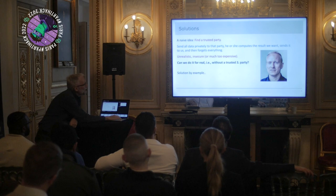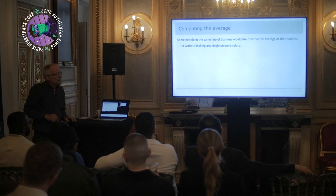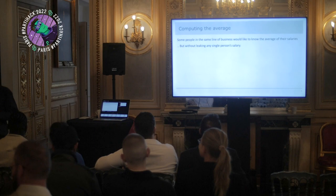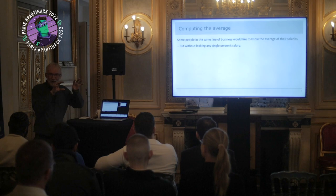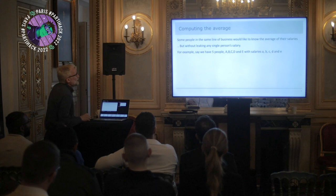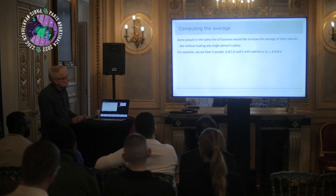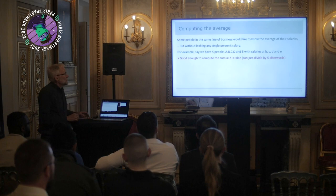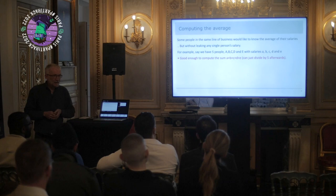Here's a very simple example. Let's say we have some people in the same line of business who would like to know the average of their salaries — to figure out whether they should go to their boss and complain, or maybe keep a low profile because they're making much more than average. But of course, without leaking any single person's salary. Can you do this? You can — it's pretty easy. Let's say we have five people A, B, C, D, and E, with salaries a, b, c, d, and e. It's good enough to just compute the sum, because then we can divide by five to get the average.